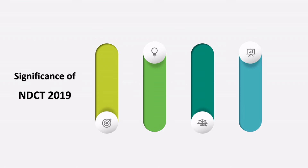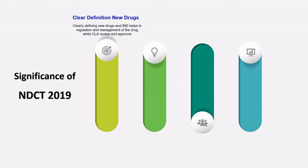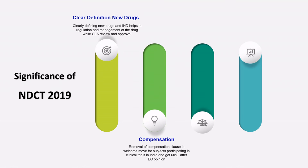Now, what is the significance of the NDCT Rules? First, they have clearly defined new drugs, which helps the regulatory authority — CDSCO — in identifying the drug, its mechanism of action, its intended use, and makes it easier for the central licensing authority to review and approve the particular drug. Next, regarding compensation — the removal of the complex compensation clause in NDCT Rules 2019 has been a great help for participants. Whenever an SAE occurs and the EC gives their opinion within 15 or 30 days, the subject gets 60% of the compensation after the EC opinion, making the compensation procedure faster and easier.